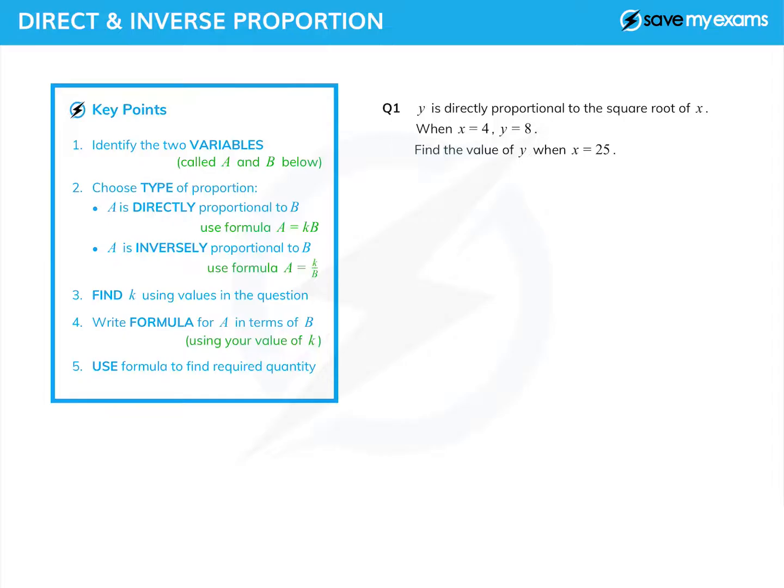K is called the constant of proportionality. We're going to find k using the values given in the question, then write down a formula for a in terms of b. They may ask us for a formula or they may not, but we'll use our value of k and then simply use the formula to find what we want to know. It's actually quite a straightforward process.